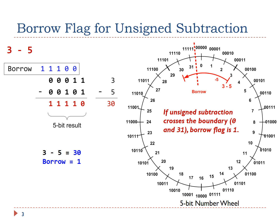We can also use the number wheel to illustrate this concept. In this 5-bit system, the borrow flag is set to 1 if subtracting two unsigned numbers crosses the boundary between 0 and 31 on the number wheel.